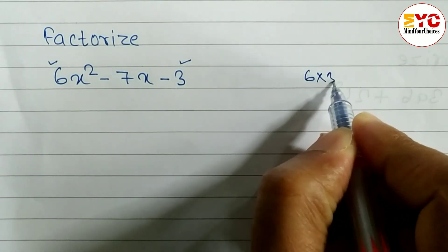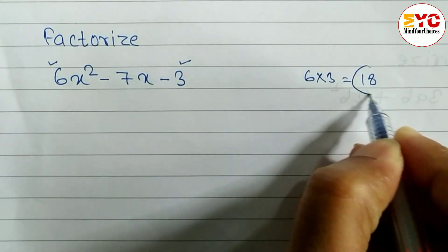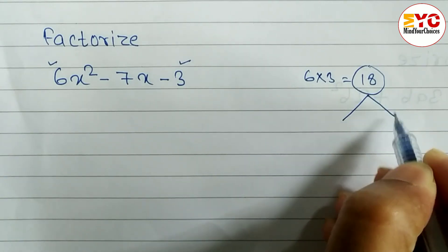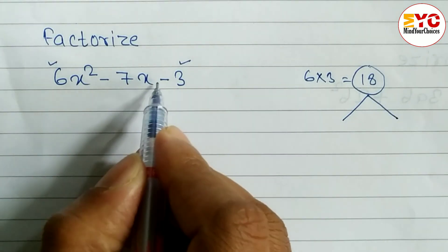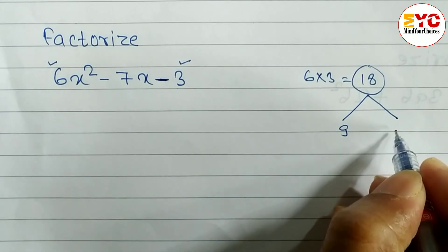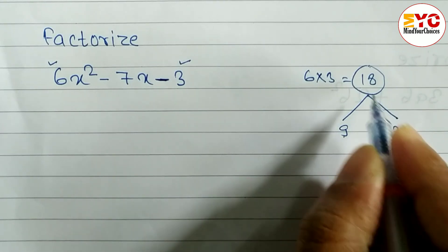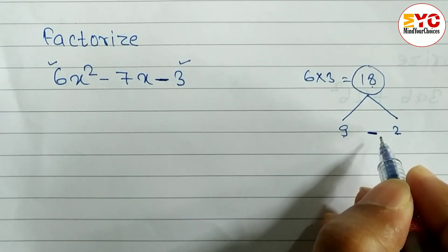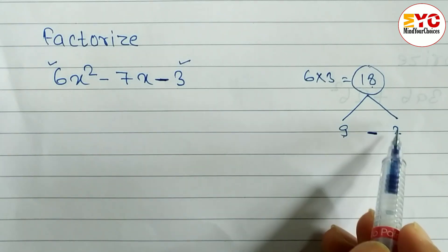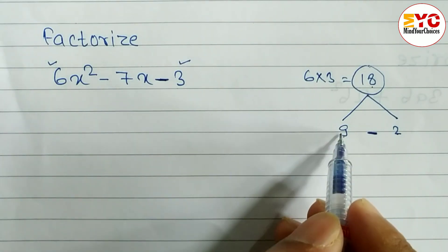When you multiply, we get 18. Now we have to find out two factors whose multiplication is 18, and since here is minus, the subtraction is 7. We know that 9 and 2: 9 × 2 = 18 and 9 - 2 = 7. While multiplying 18 and while subtracting we get 7.